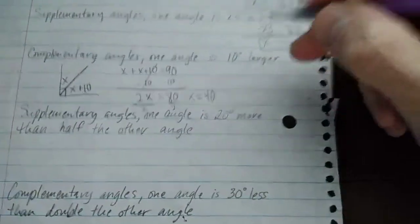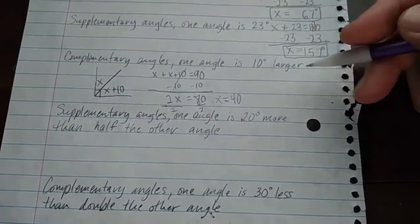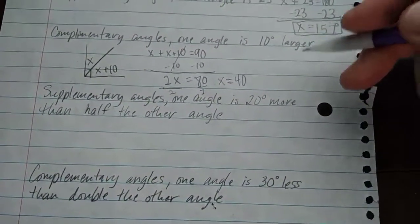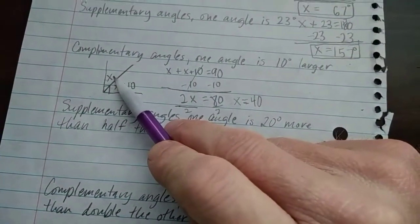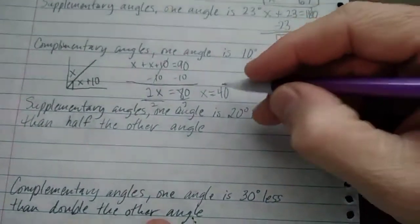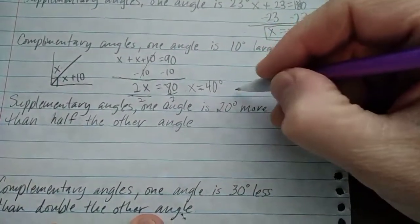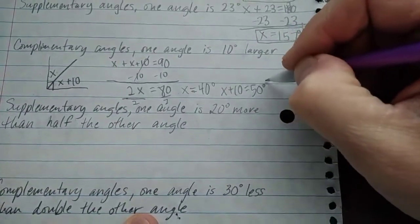So x equals 40. Now you need to be careful. If it just says solve for x, you're done. If it says what is the measure of each angle, well, I found this angle. This angle is 40. If this angle is 40, what's this angle? 50. So the way I write that is x equals 40 degrees, x plus 10 equals 50 degrees.